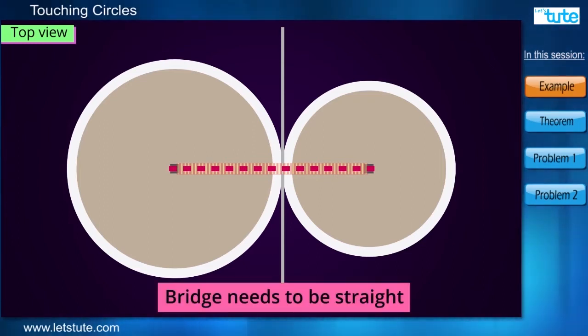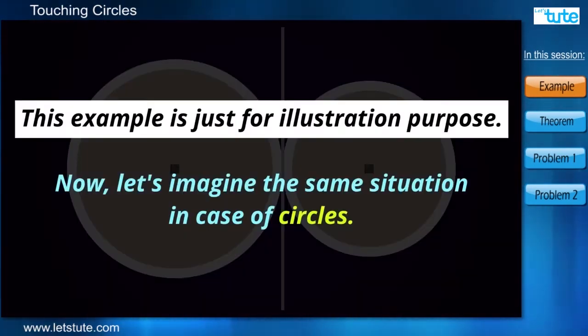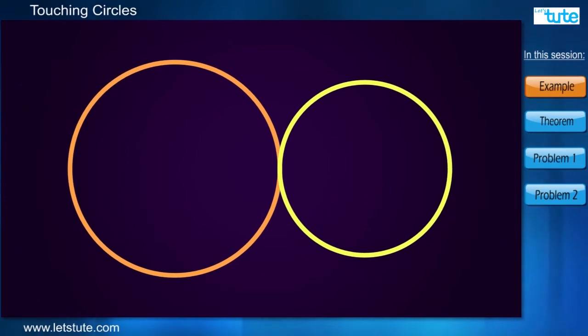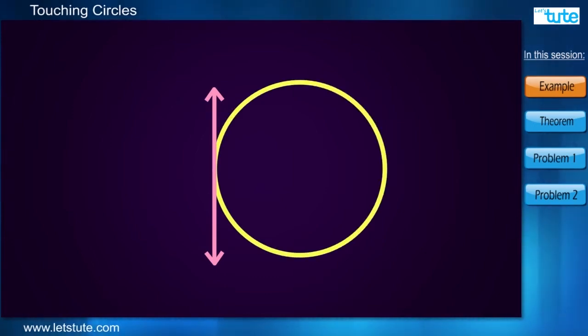Now this bridge needs to be perfectly straight. So can you guys think of something? Is there anything that you can observe? Here we can see that there are two circles which are touching at one point. Well, we did learn something about a line that touches the circle at one point. Do you remember anything about that? Yes, we are talking about a tangent.